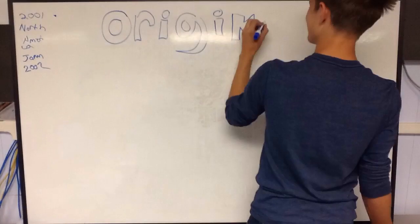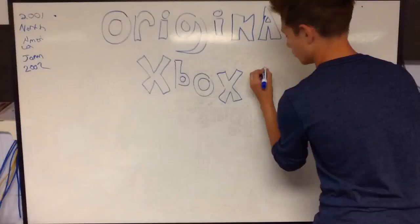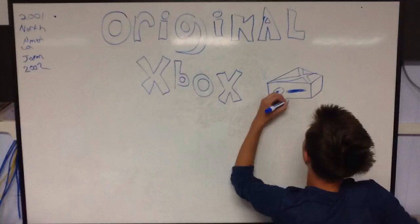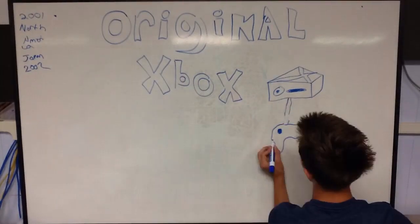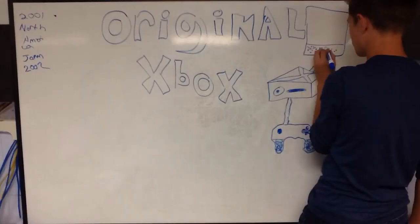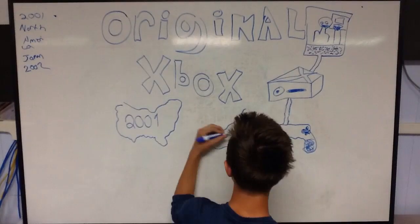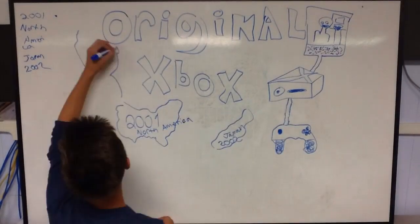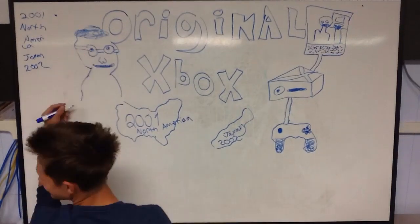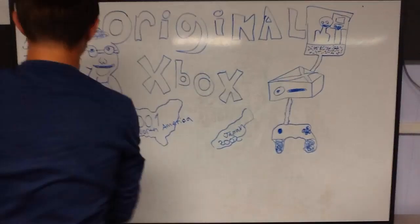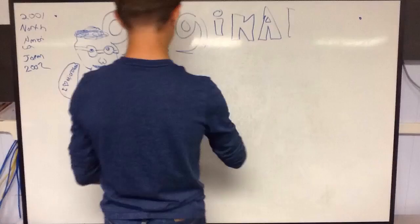The original Xbox. It was a console game and it had a big X on top. It had remotes, but they weren't wireless yet. The console connected to the TV. In 2001, Xbox was released to America, and in 2002, it was released to Japan. Bill Gates was the one who created this machine.